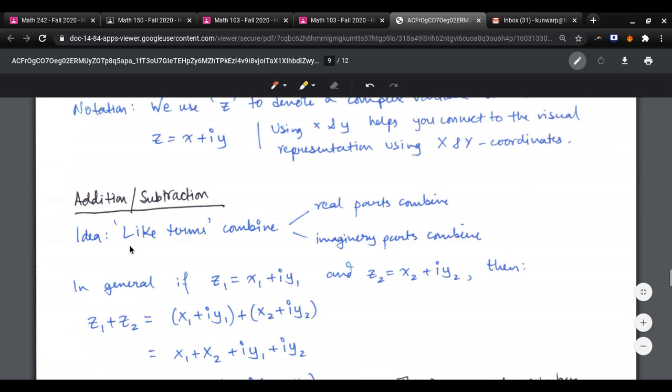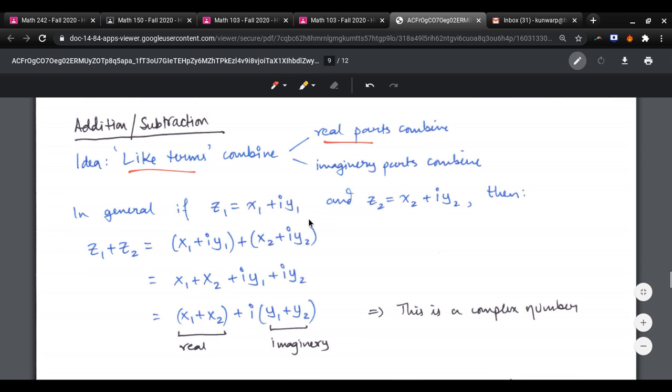The idea for addition and subtraction is that like terms combined, meaning what are the like terms? The real parts combined and imaginary parts combined. So in general, if z1 is x1 plus iy1 and z2 is x2 plus iy2, then z1 plus z2 becomes x1 plus x2, the real part, plus i times y1 plus y2, imaginary. And you can check that this is a complex number.